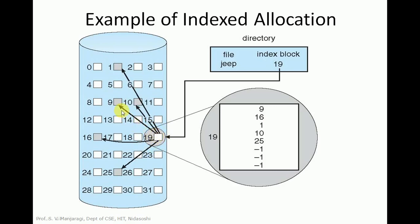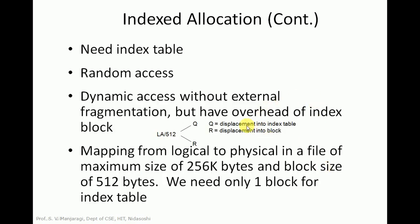From the index table there are links pointing to block number 9, block 16, block 1, and block 25. In indexed allocation there is a need to maintain an index table, which means one data block is used for the index table — that is the overhead. Indexed allocation supports random access. Whenever you want to access data randomly, you can make use of indexed allocation. It allows dynamic access without external fragmentation, but there is overhead for maintaining the index table.